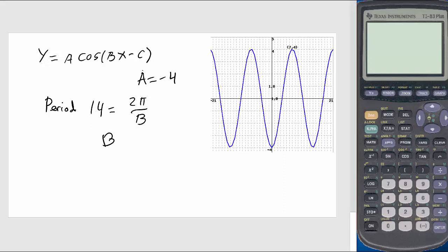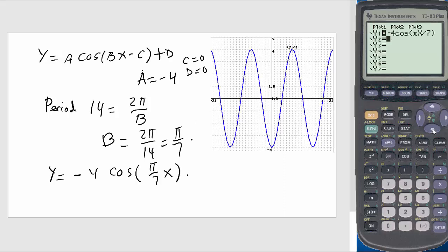Now if we simplify, you get your B equals 2π over 14, this is π over 7. So we got our B equals π over 7. So we have negative 4 cosine π x over 7, and fix the window according to this.